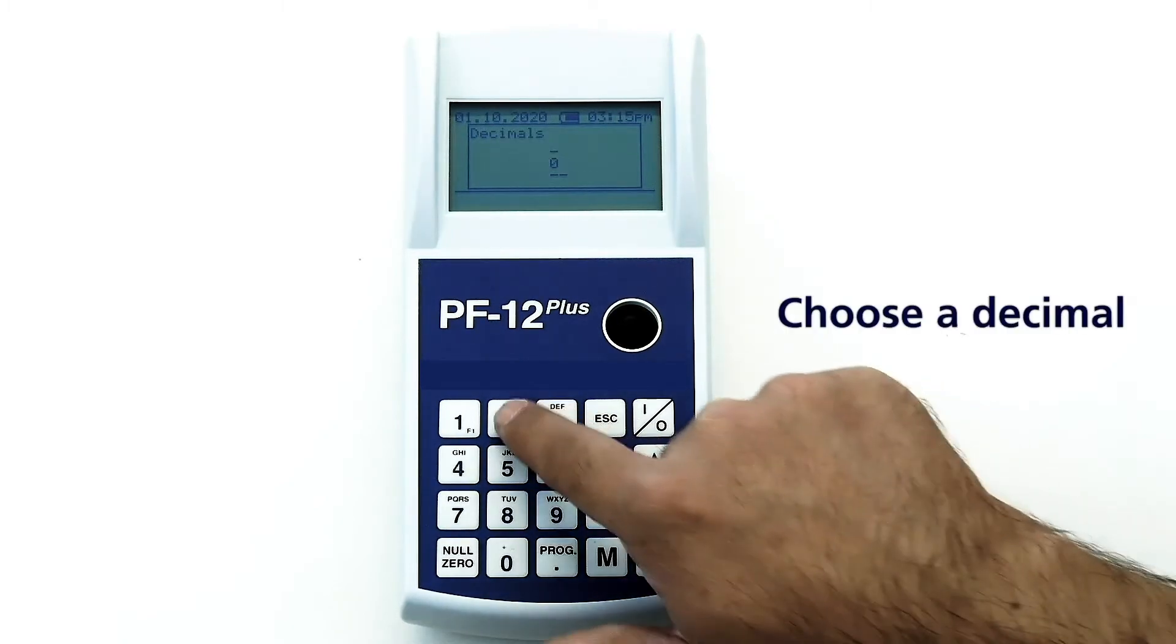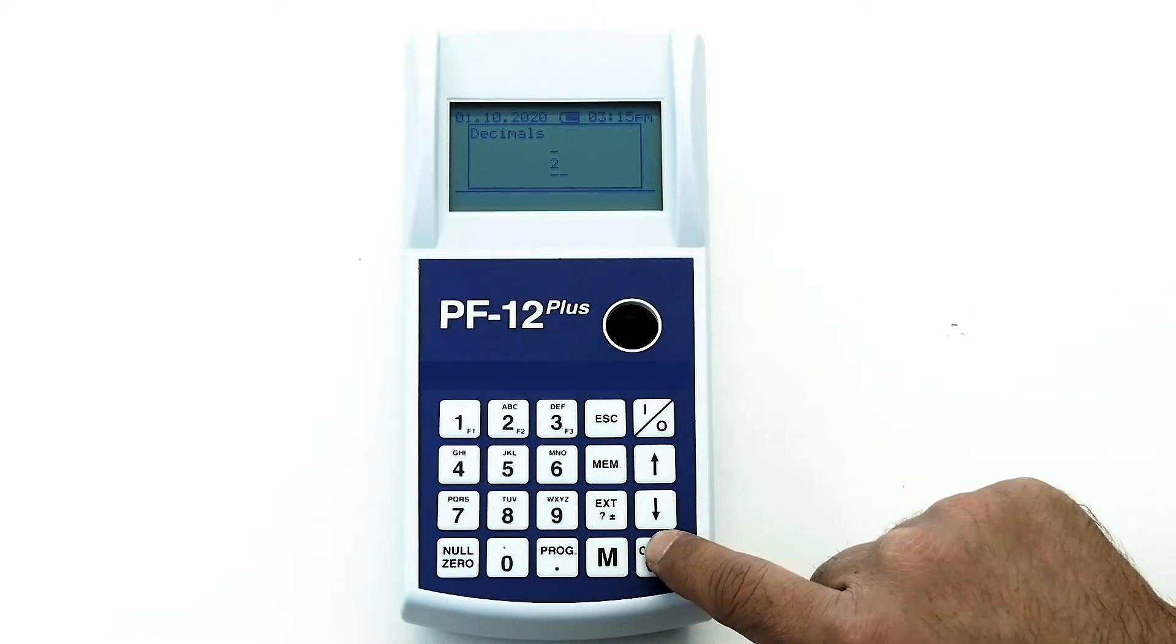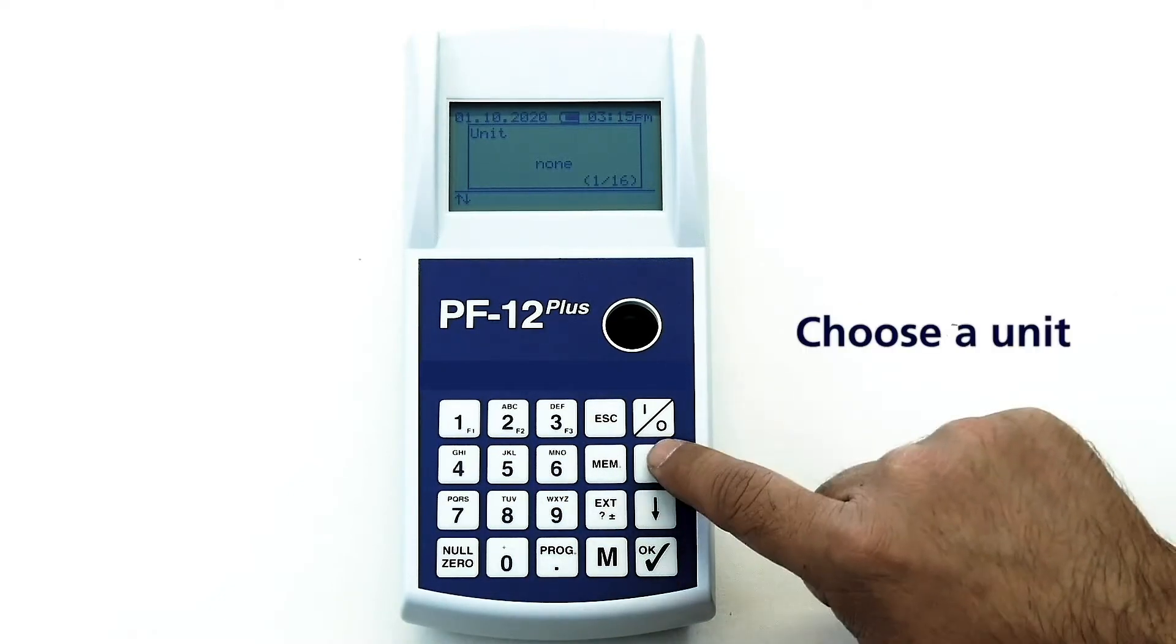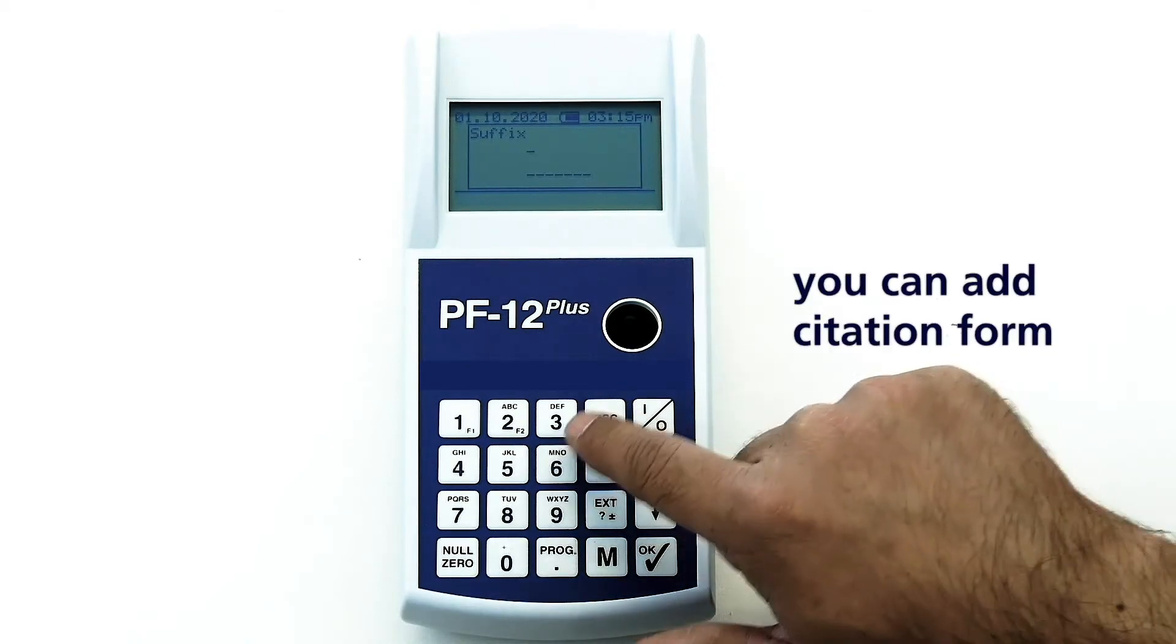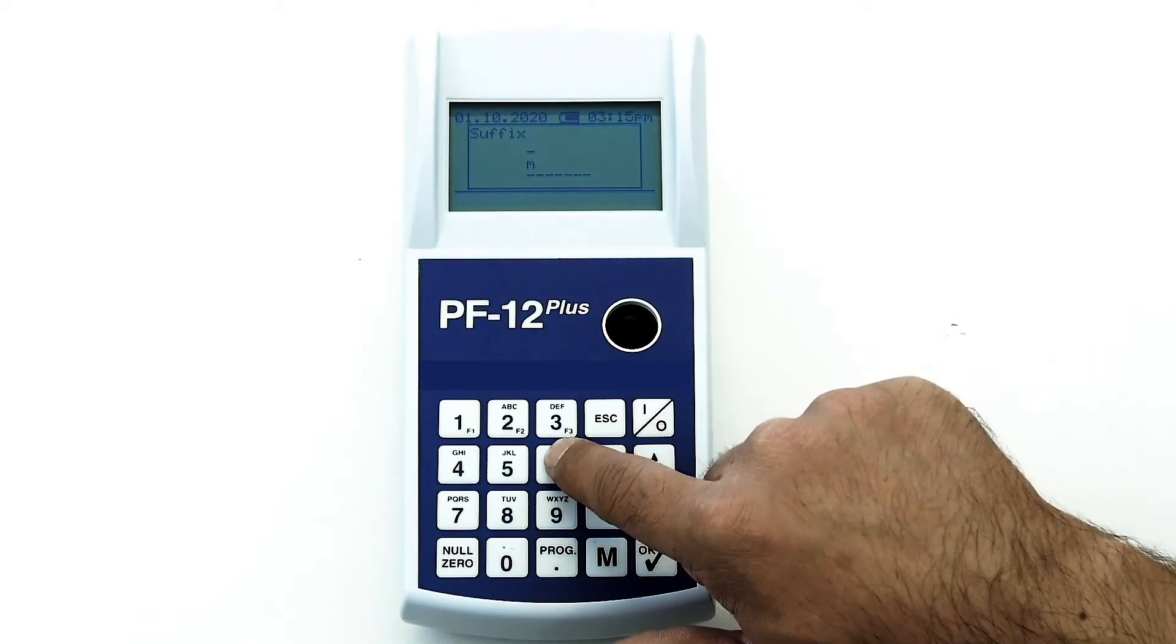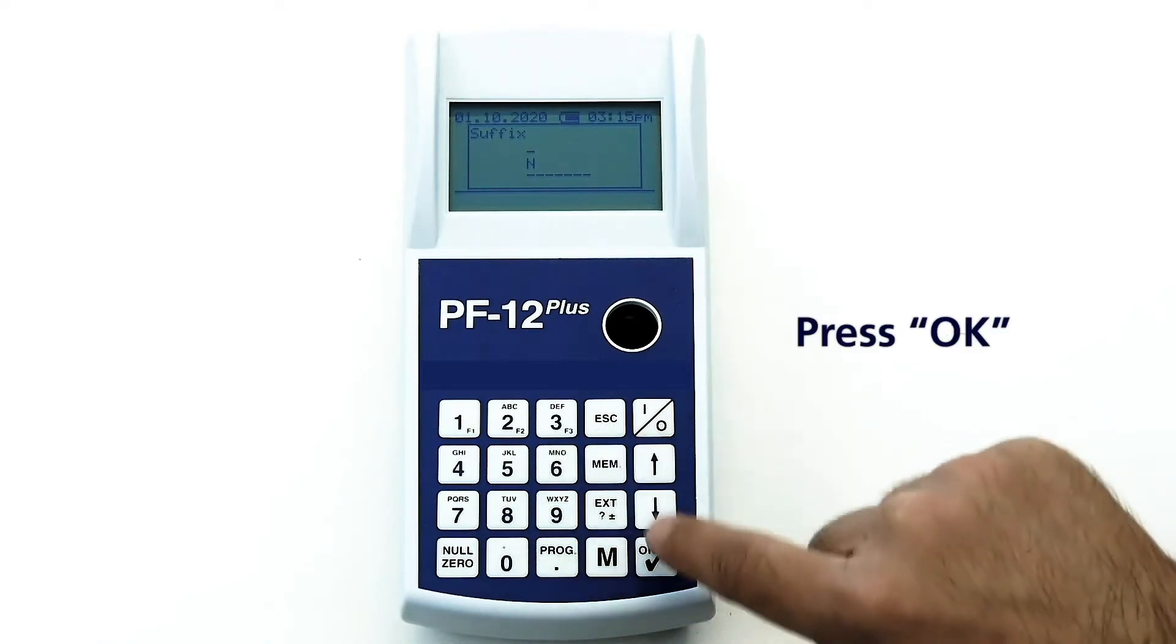Choose a decimal for this method. Choose a unit. Press OK. In suffix you can add the citation form for this method. Press OK.